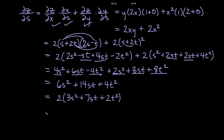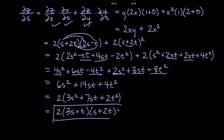You can leave the answer as 6s² + 14st + 4t², factor out 2 to get 2(3s² + 7st + 2t²), or factor completely to 2(3s + t)(s + 2t). How far you take the factoring is up to you or your instructor — most people would stop at the expanded or partially factored form.